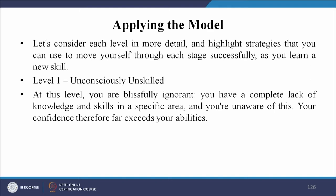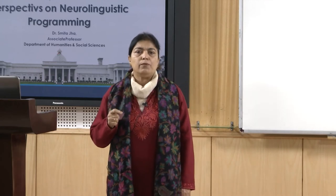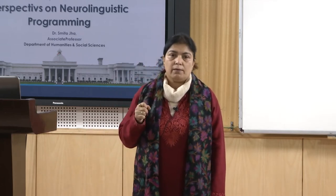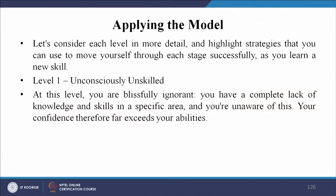Now, applying various models to gain the level of consciousness and to decrease unconscious incompetence. Let us consider each level in more detail and highlight strategies and ways that you can use to move yourself through each stage successfully as you learn a new skill. Level 1 is unconsciously unskilled. At this level you are blissfully ignorant — you have a complete lack of knowledge and skills in a specific area and you are unaware of this. Your confidence therefore far exceeds your abilities.